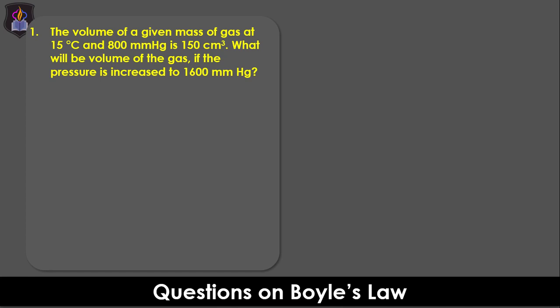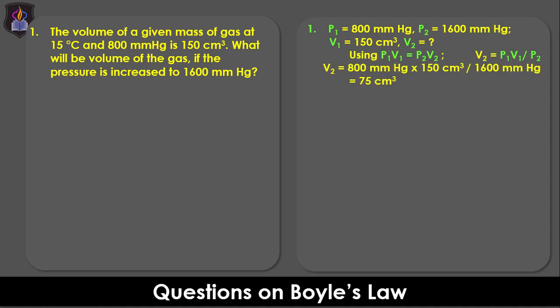The solution: The first thing we need to do is to identify the given parameters. From the question, the initial pressure P₁ is 800 mmHg while the final pressure P₂ is 1600 mmHg. Similarly, the initial volume V₁ is 150 cm³ and since we are asked to determine the final volume V₂ at a constant temperature of 15°C, it means the question is related to Boyle's law. So, we use the equation P₁V₁ = P₂V₂, then make V₂ the subject of formula and then substitute the values of the parameters and evaluate to obtain 75 cm³ as the value of V₂.